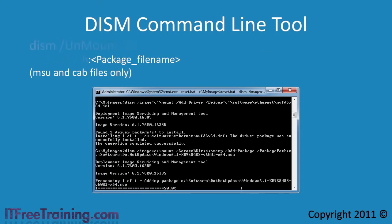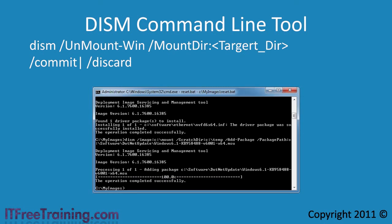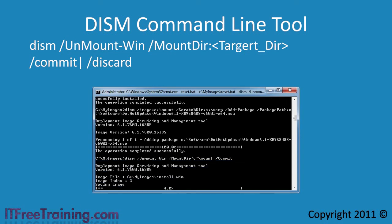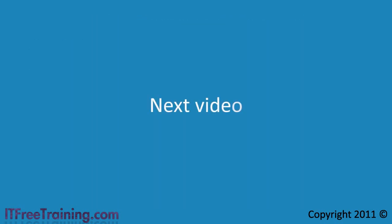The last step I need to do is unmount the image. I can do this with the /unmount-WIM switch. Next I need to specify the mount directory with the /mount-dir switch. The last option I need to add is the /commit switch or /discard switch. In this case I will commit the changes and they will be saved. If I used the discard switch, the changes would be lost and the WIM would be left unchanged. Now that you know how to capture a WIM file and perform maintenance on it, in the next video I will look at deploying a WIM image to a computer.